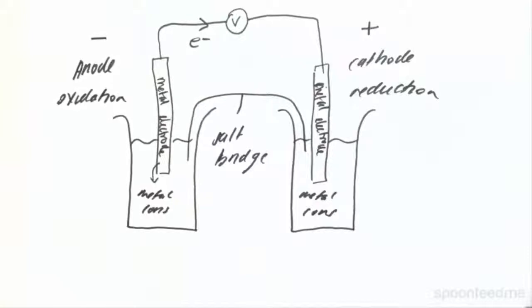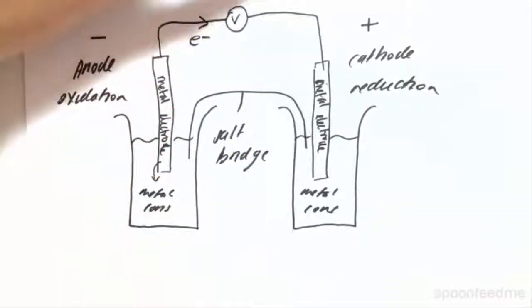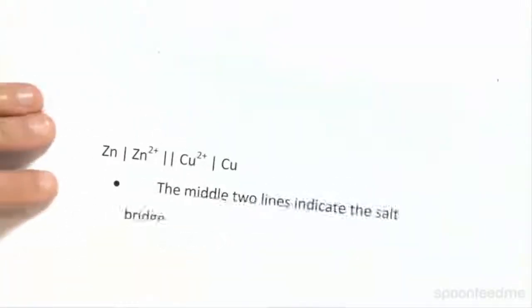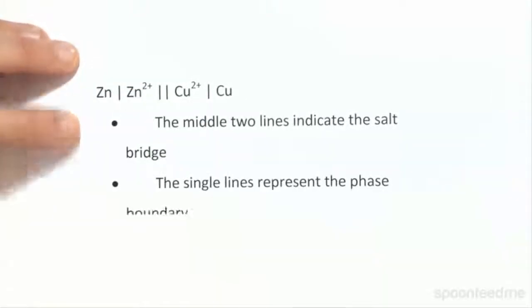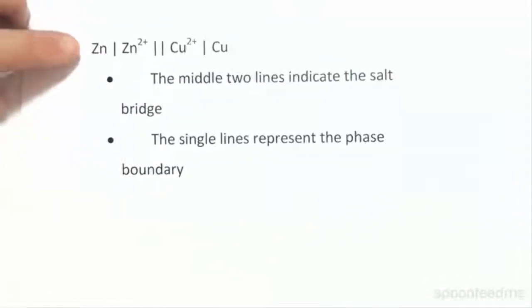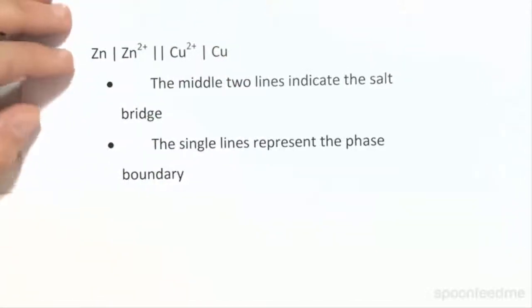So this is our galvanic cell — we've got two metal electrodes in the solution of each of those metals, connected by a voltmeter and a salt bridge. If we have a galvanic cell made of zinc and copper, this is how we'd name it: Zn | Zn²⁺ || Cu²⁺ | Cu. Zinc makes up the anode because we go from zinc to Zn²⁺; copper makes up the cathode because we go from Cu²⁺ to copper metal. You read this left to right. The two middle lines indicate the salt bridge, and the single lines represent the phase boundary between the metal electrode and its solution.